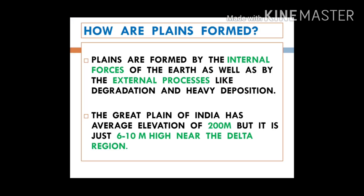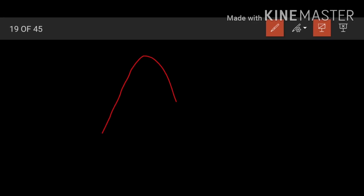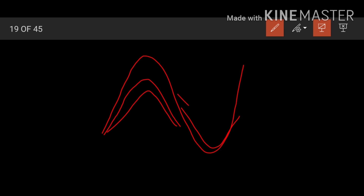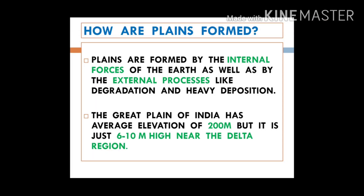Now let us learn how a plane is formed. A plane is formed by both internal as well as external processes like degradation. The agents of erosion take away sand, silt, clay, and sediments, and deposit them in low-lying areas. High land is gradually eroded and low land is gradually filled. Nature tries to attain a balance or equilibrium, which is why agents of erosion, weathering, and gradation keep working continuously.